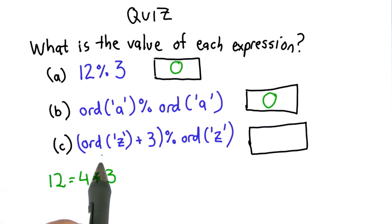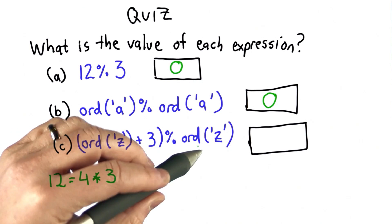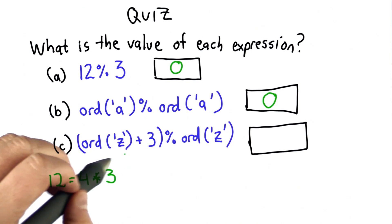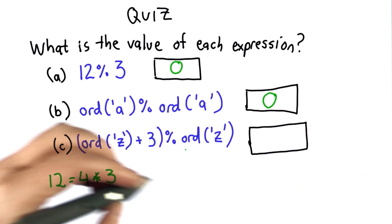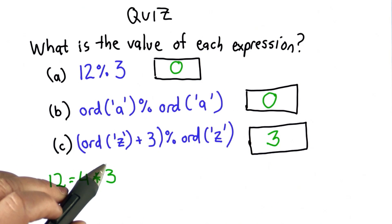For part C, well now we've added 3. In order to know what the result is here, we've got to know whether ord of Z is greater than or less than 3. As long as ord of Z is greater than 3, well that would mean ord of Z plus 3 modulo ord of Z must be 3 because the remainder will be what we added to ord of Z, since ord of Z by itself is always divisible by ord of Z. And we do know that ord of Z is greater than 3. So that means the result will be 3.